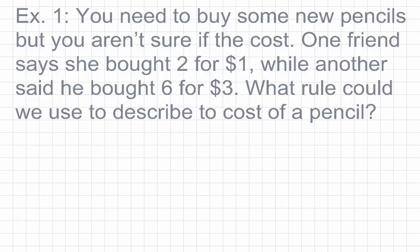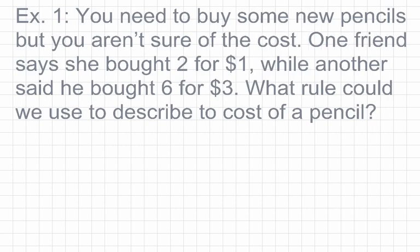Before we get into our vocabulary, I want to take us back to where we've been and connect it to where we're going. For this first example, it says you need to buy some new pencils but you aren't sure of the cost. One friend says she bought two pencils for one dollar, while another said he bought six pencils for three dollars. What rule could we use to describe the cost of a pencil? We use rules like that to help us make smart choices when we're trying to make purchases.